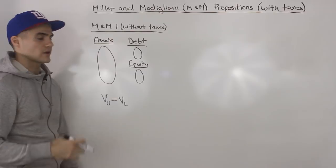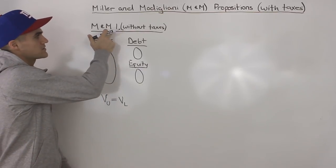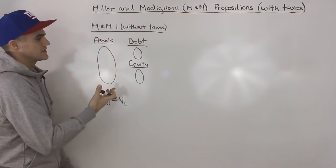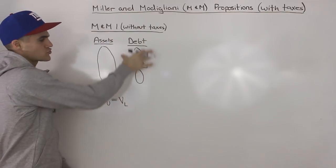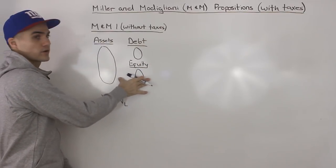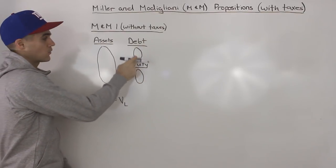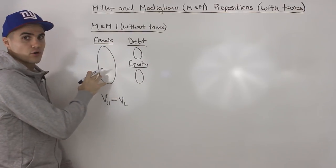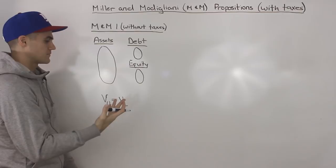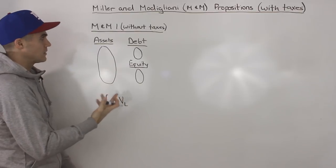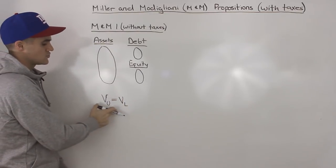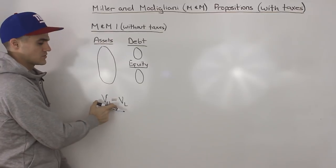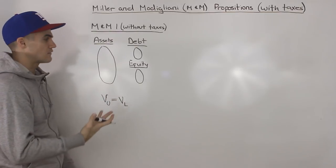To do a quick review: M&M Proposition 1 without taxes basically stated that no matter what the capital structure of a firm is — or in other words, no matter what the mix of debt and equity — the value of the firm is always going to be the same. M&M Proposition 1 without taxes is usually stated as: the value of an unlevered firm equals the value of a levered firm.